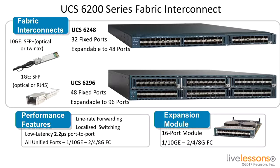The Fabric Interconnects themselves are active/passive for the management, which means that management is actually running active on one switch and passive on another. And if the management system goes down on one switch, the other switch takes over. They have individual IP addresses and then share what we call a clustered IP address, so you connect to the virtual IP address and the system manages the failover for you.